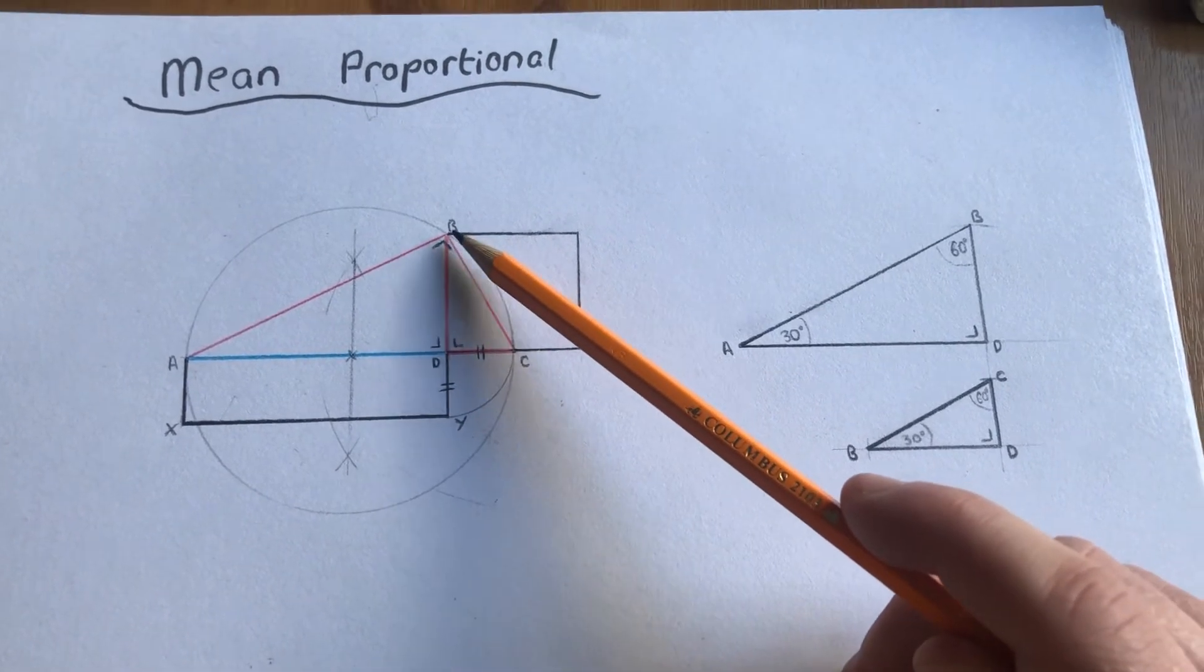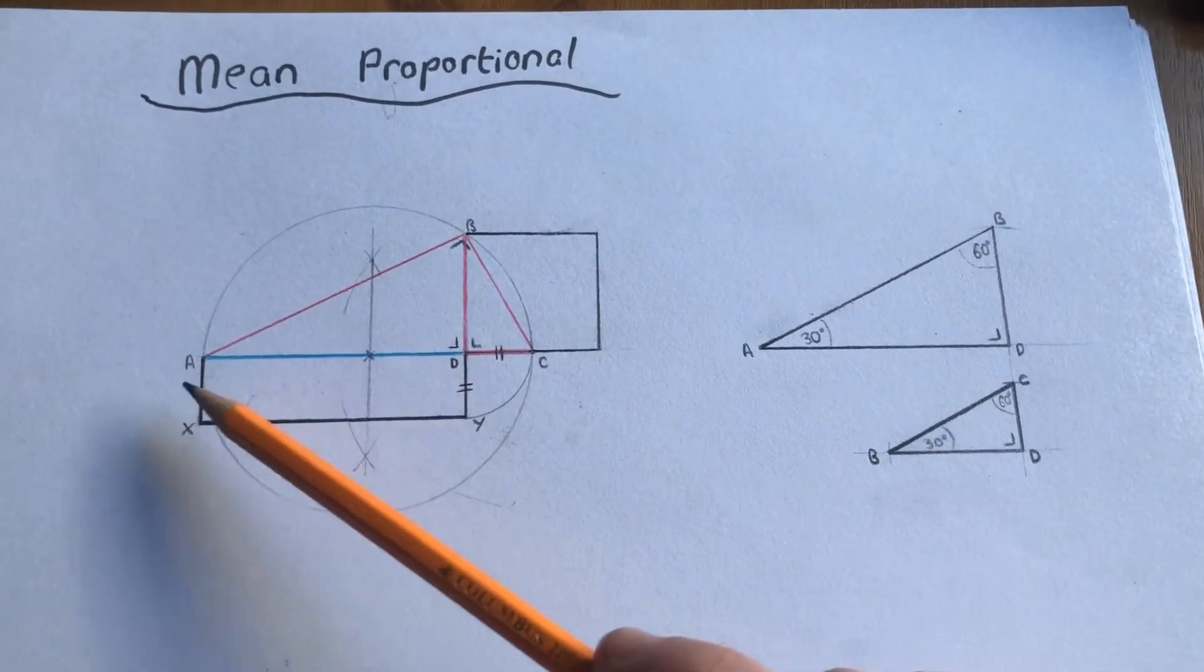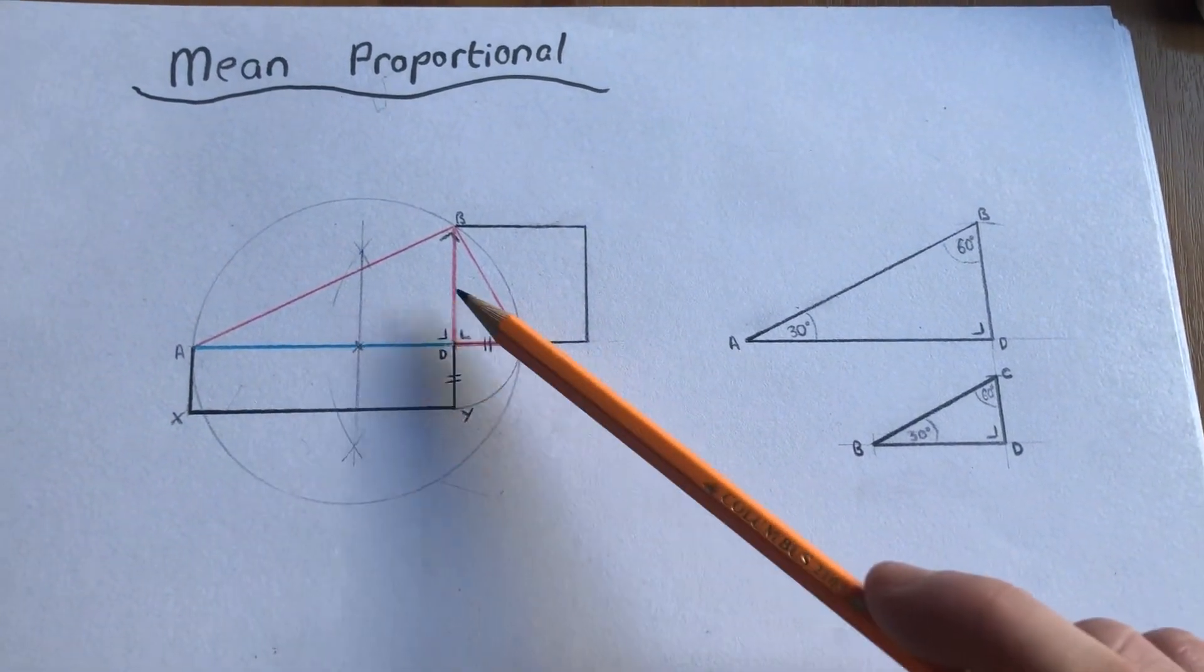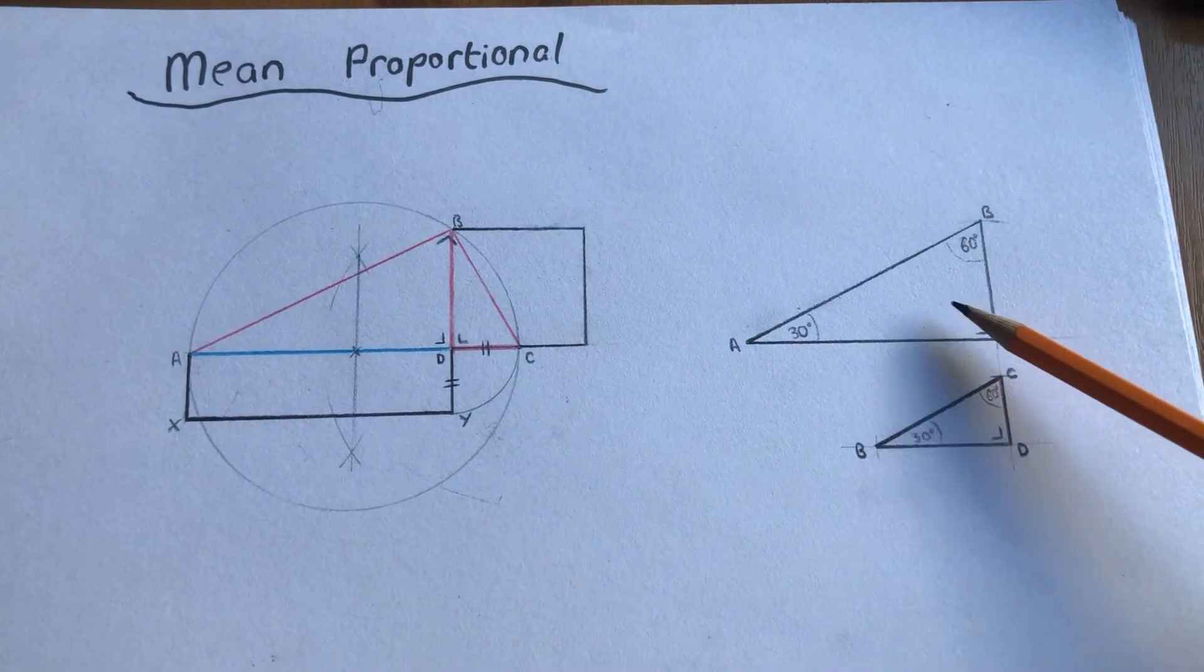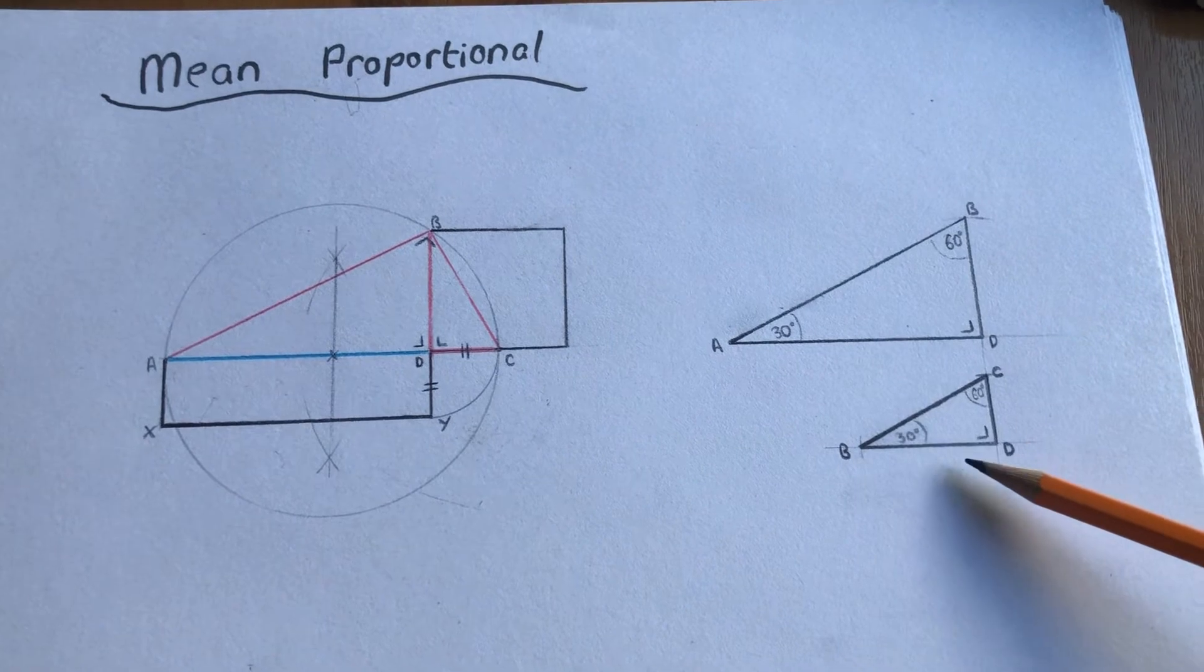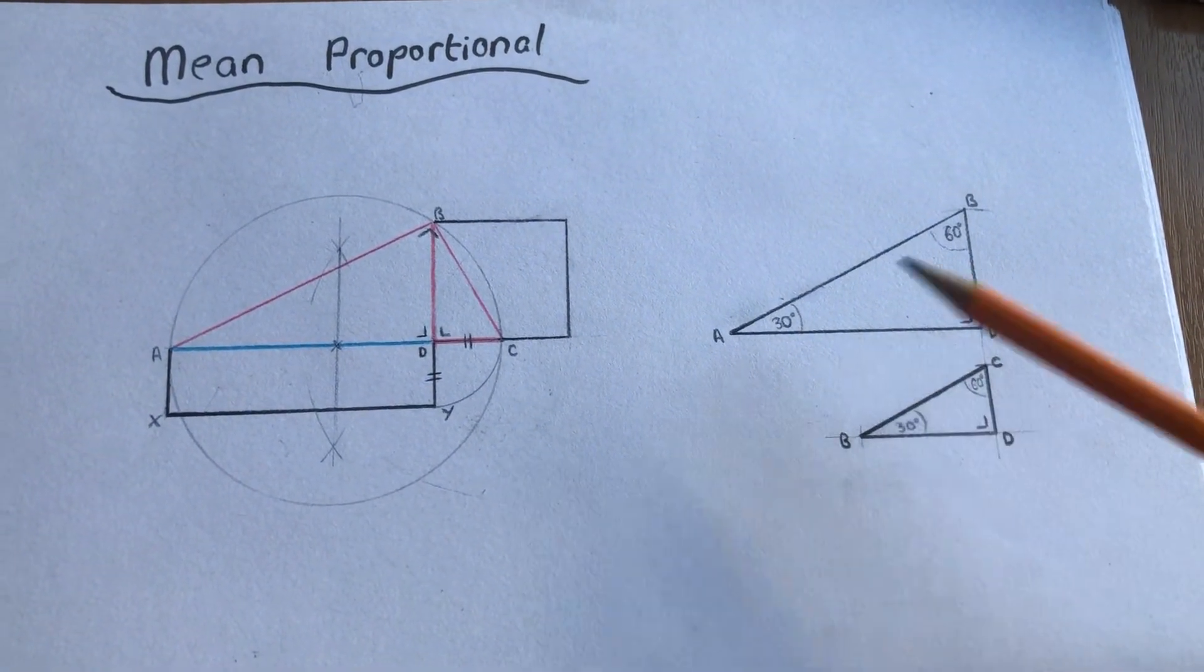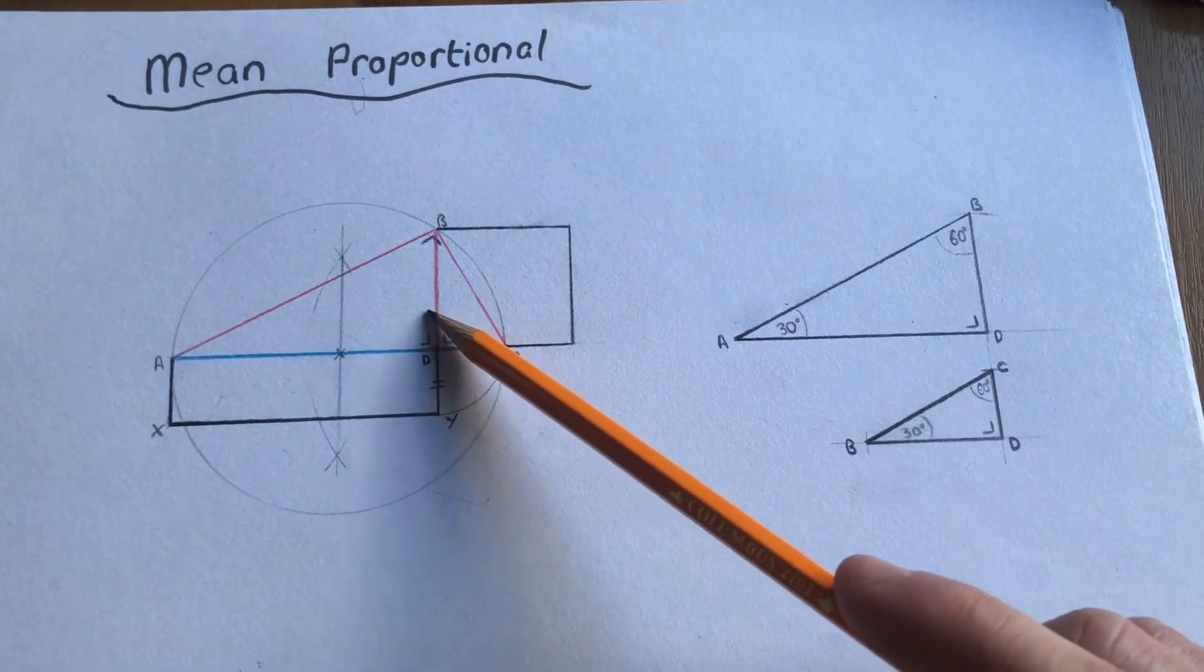Then we draw a line from point B to point A and from point B to point C. This gives us two triangles. These triangles are similar and congruent. They are both right-angled triangles. This tells us that our geometric mean is correct.